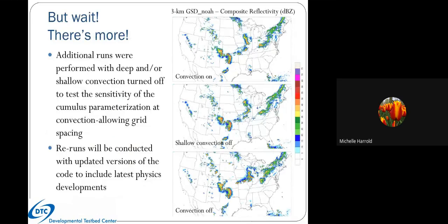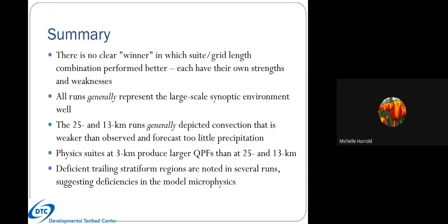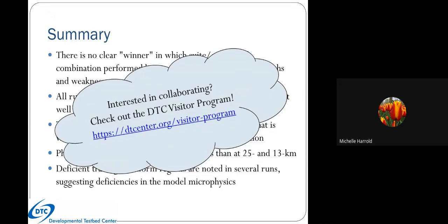To wrap up, I showed a subset of our results. We have both subjective and some objective evaluation, and we're also looking at additional runs with deep and/or shallow convection turned off to better test the sensitivity of cumulus parameterization at convective-allowing grid spacings. We will be rerunning results to include the latest physics updates. I also want to mention the DTC visitor program—we're currently working with Bill Gallis and John Thielen, which has been a great partnership. If anyone is interested in collaborating, please reach out or look into the visitor program.